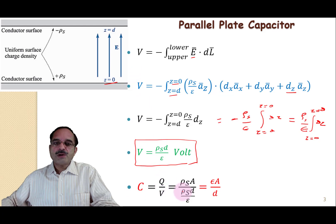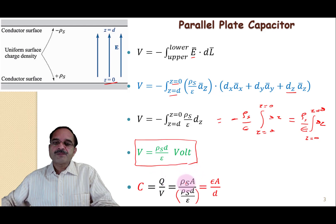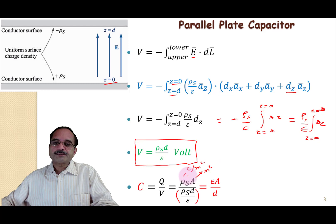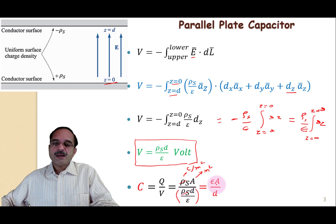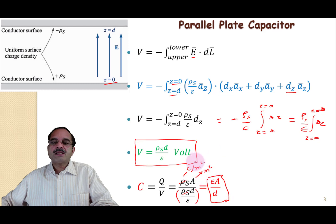Substituting V = ρs·d/ε, and knowing that the total charge Q = ρs × A (charge density in C/m² multiplied by area in m²), ρs cancels out and we finally get C = εA/d. That is the capacitance of the parallel plate capacitor.